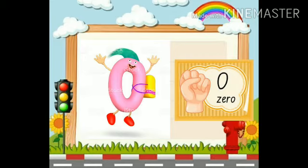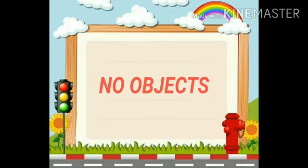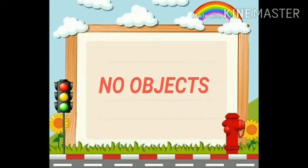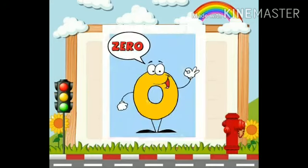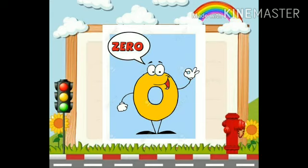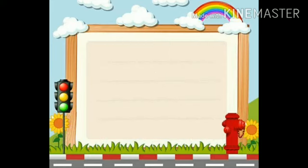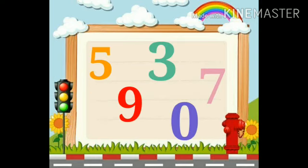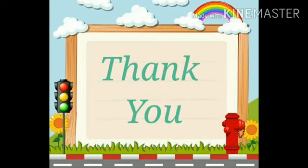So kids, did you understand? Jab hamaare paas koi bhi objects nahi hoti hai, then we say that we have 0 objects. Ok? And 0 has no value. Now, let's do a small activity. There are so many numbers over here. You have to search for number 0. Ok babies? Thank you. Have a nice day.